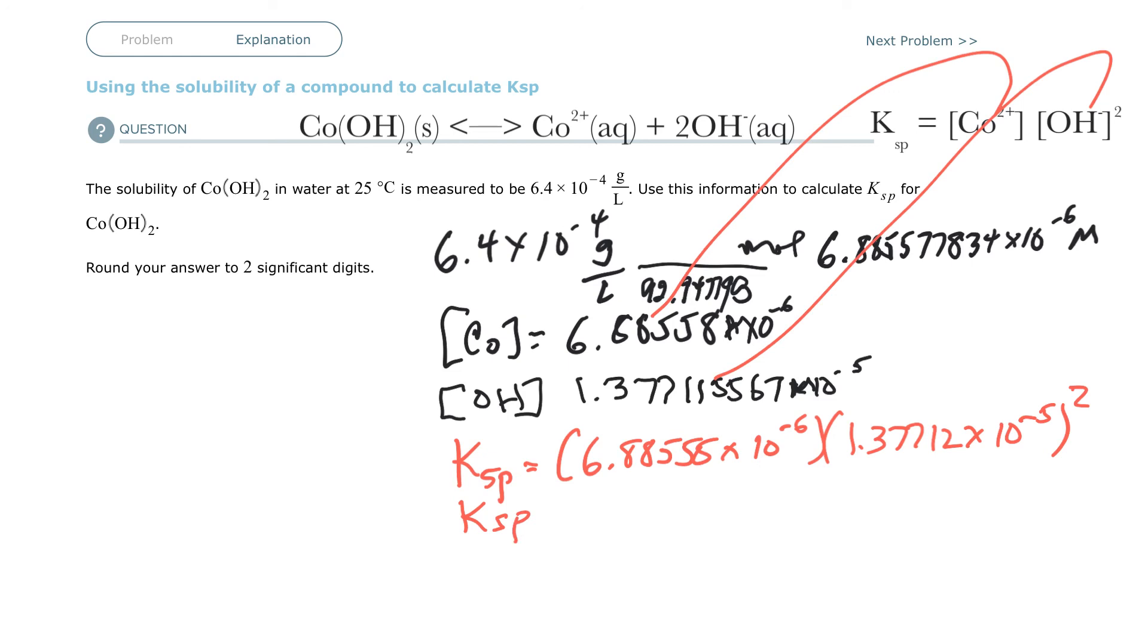So that gives me 1.306 times 10 to the minus 15. And they asked me to round to 2 significant digits. So Ksp is 1.3 times 10 to the minus 15.